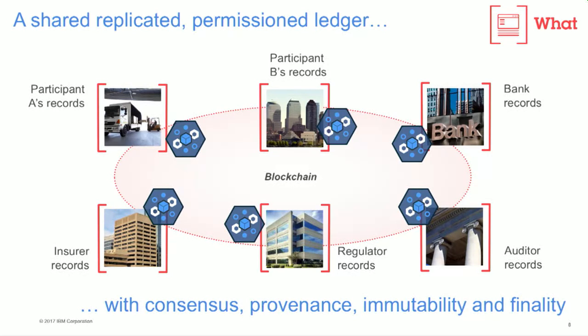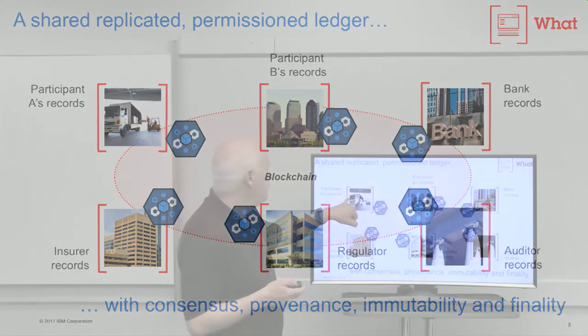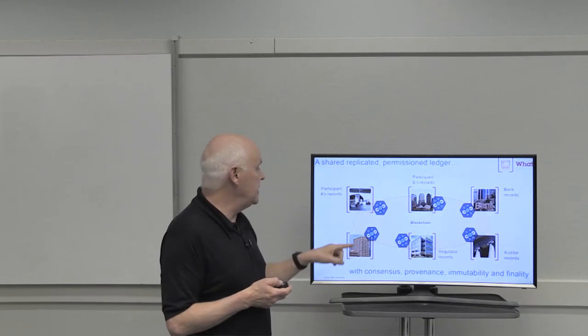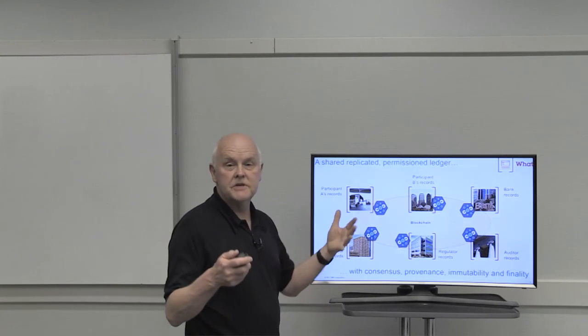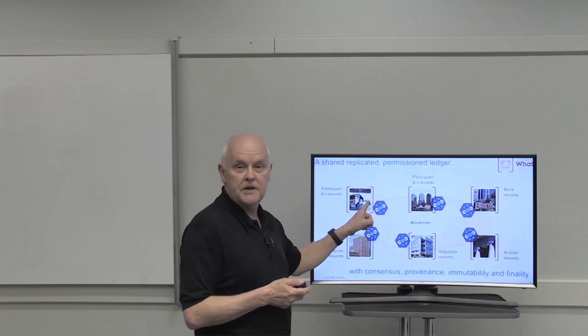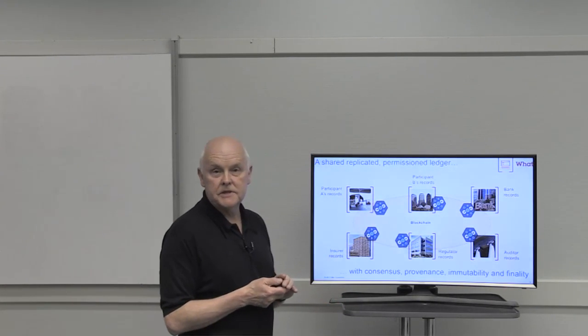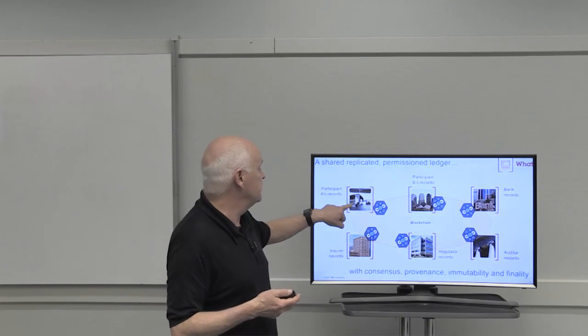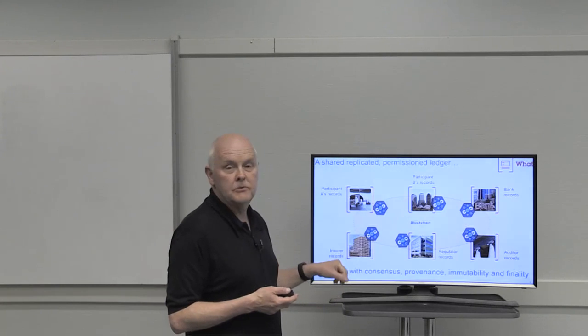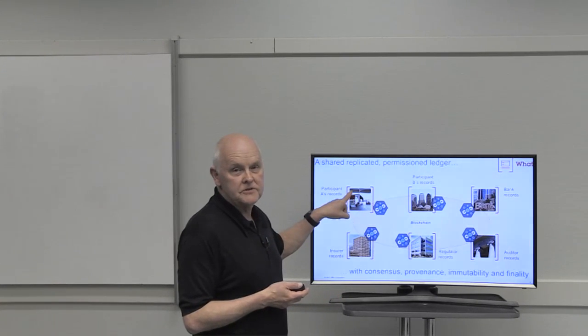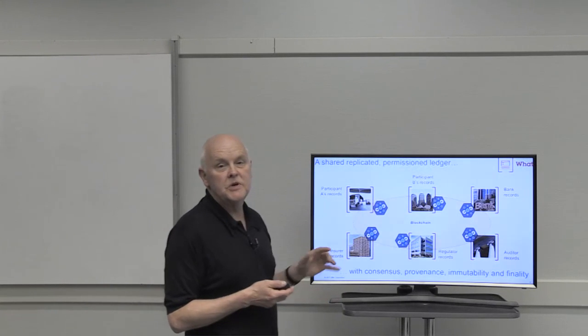We actually use privacy services to determine who can see what on the business network. So for example, if participant A was actually exchanging an asset with participant B, each of these members would be able to see the full details of that transaction. However, the bank, if it was not involved in that transaction, wouldn't be able to see the details. Alternatively, if participant A was transferring something with the bank, those two counterparties would be able to see the full details of the transaction and possibly B wouldn't.